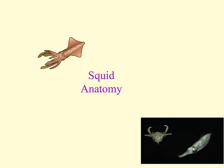Molluscs all have bilateral symmetry, where you can divide the body into two identical sections. Additionally, molluscs have a complete digestive system consisting of both a mouth and an exit, the anus. They have an open circulatory system, except for the cephalopods including the squid, which have a closed circulatory system, meaning the squid will have a heart and blood vessels for transport.